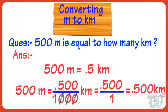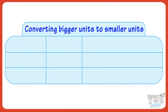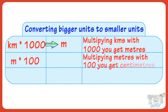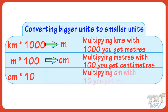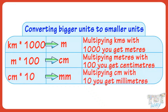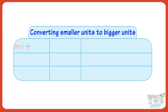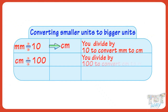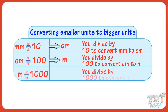So kids, let's revise what we learned. Multiplying kilometers with 1,000, you get meters. Multiplying meters with 100, you get centimeters. You divide by 10 to convert millimeters to centimeters. You divide by 100 to convert centimeters to meters. You divide by 1,000 to convert meters to kilometers.